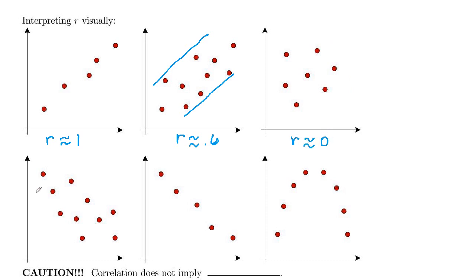Here, it looks like your data channels down from left to right. So R is going to be negative. And the points are kind of spread out. They're not really close to a line. So I'm thinking here, R would be approximately negative 0.6.